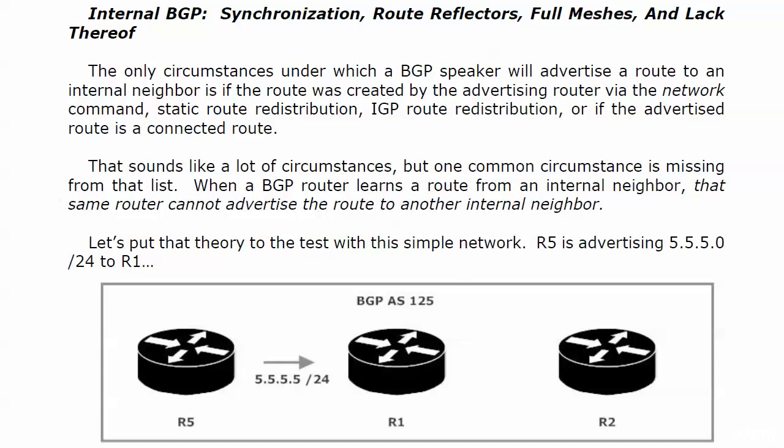A BGP speaker is going to advertise a route to an internal neighbor under certain circumstances, not all circumstances. If that route was created by the router that's going to do the advertising via the network command, no problem. If the route was learned via static route redistribution, IGP route redistribution, or if the advertised route is a directly connected route, then a BGP speaker will advertise it to an internal neighbor.